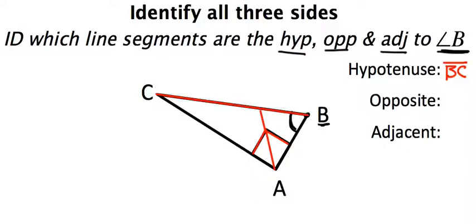Now the next thing it's asking for is the opposite. So let's find the opposite of angle B. If I take angle B and draw a line as far away from it as possible, pointing to the line that's as far away as possible, that is my opposite. In this case, that's line segment AC.